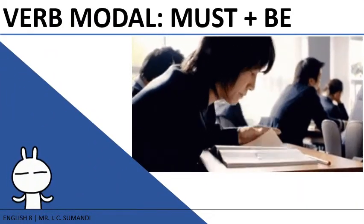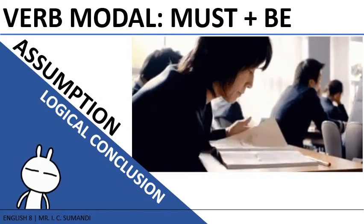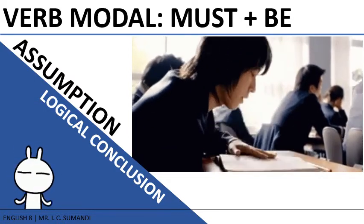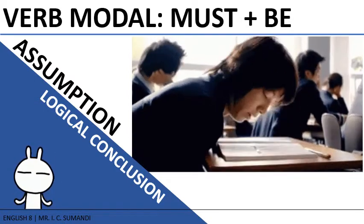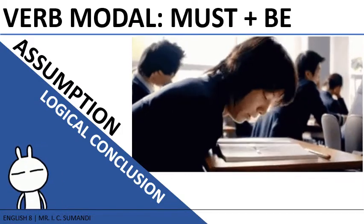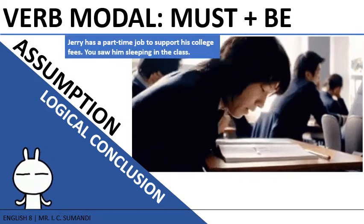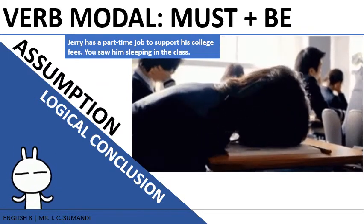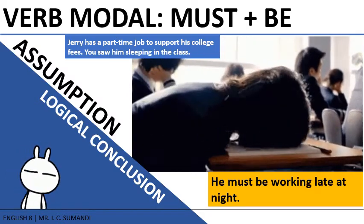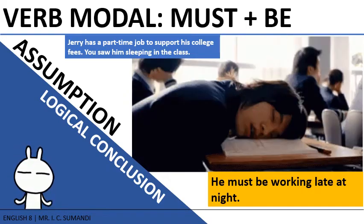Another context of the verb modal must is giving an assumption or logical conclusion. Must be plus verb-ing or adjective gives a context of assumption — you assume something based on logical observations. For example, if your classmate Jerry sleeps in class but you know he has a part-time job, you can assume: 'Jerry must be working late at night' or 'Jerry must be tired because of his part-time job.'